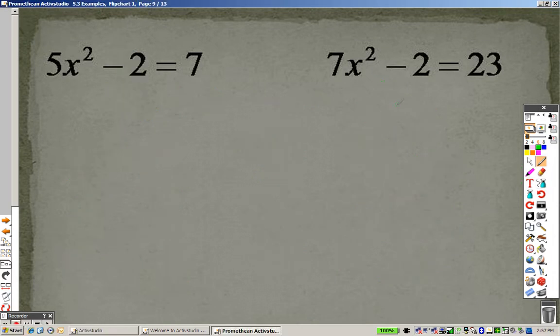And this problem here, add 2 to both sides to get the numbers on one side. So I end up getting 7x² equals 25. It's 7 times x², so I divide both sides by 7. And I end up getting x² equals 25 over 7. So I have to square root everything.